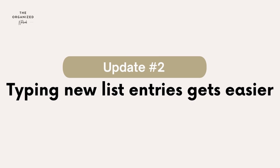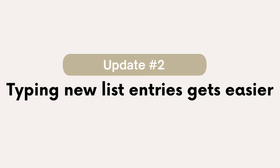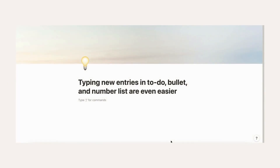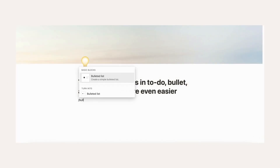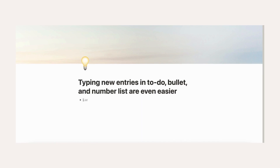Typing new entries in to-do, bullet, and number lists are even easier. You can just press the return key at the start of one of these entries to create a new to-do, bullet, or number list item.